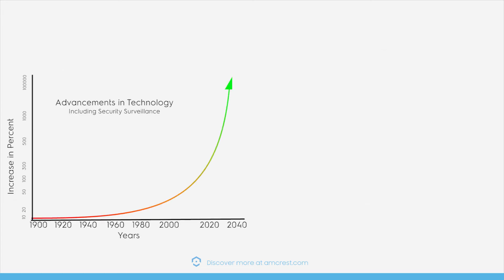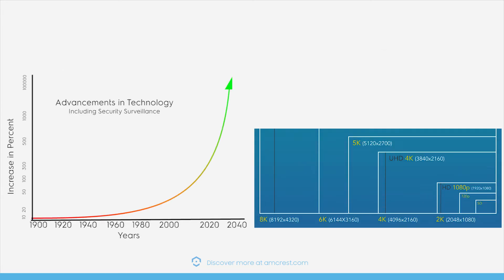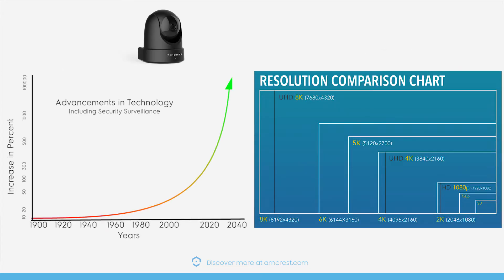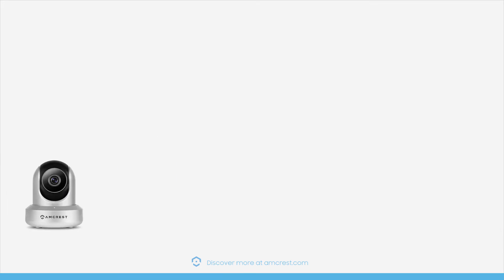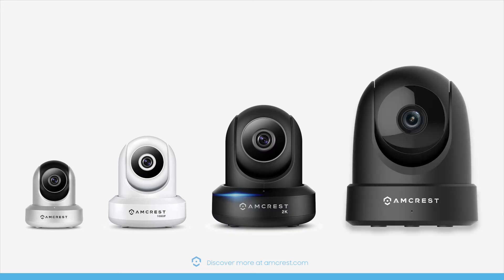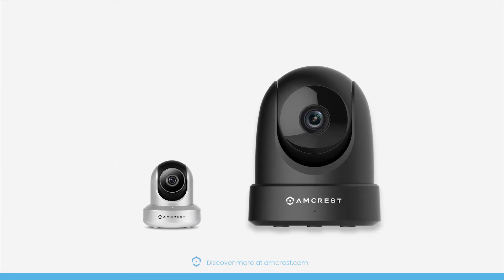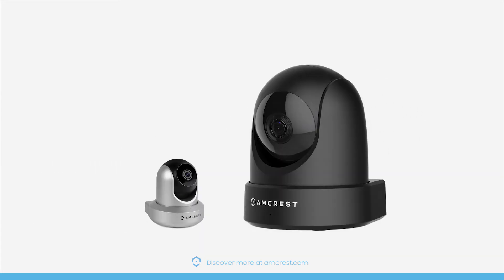With the advancement of surveillance technologies and video resolutions, newer hardware can have compatibility issues with legacy software and plug-ins. Amcrest cameras are always moving forward, embracing the latest video security technology. As our products continue to grow and progress, cross-compatibility or backwards compatibility is not always achievable or realistic with the constant advent of newer technologies.